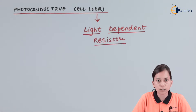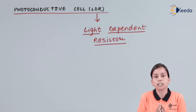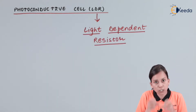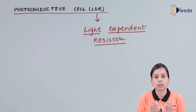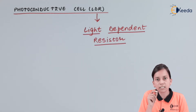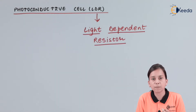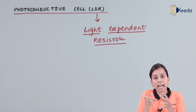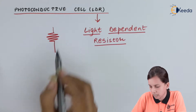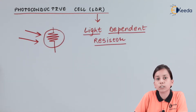A photoconductive cell consists of a resistor which is totally depending on the presence of light. The resistance of the material which makes up this photoconductive cell is such that its resistance can be varied with the help of light. If light is present, resistance changes in the presence or absence of light, helping us to produce voltage across any load. If we have a resistor, we use this symbol so that we can differentiate it from a normal resistor.